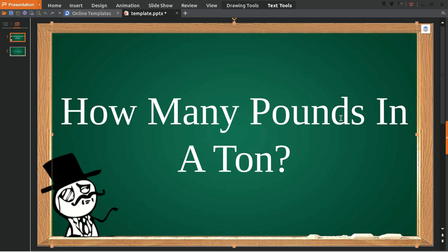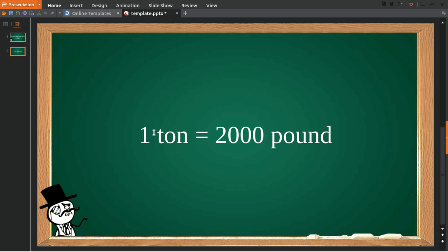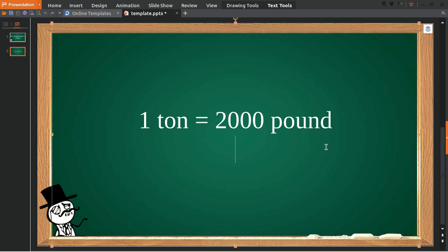Well, this is the answer to the question. One ton is equal to two thousand pounds. So yeah, two thousand pounds. It's really big.